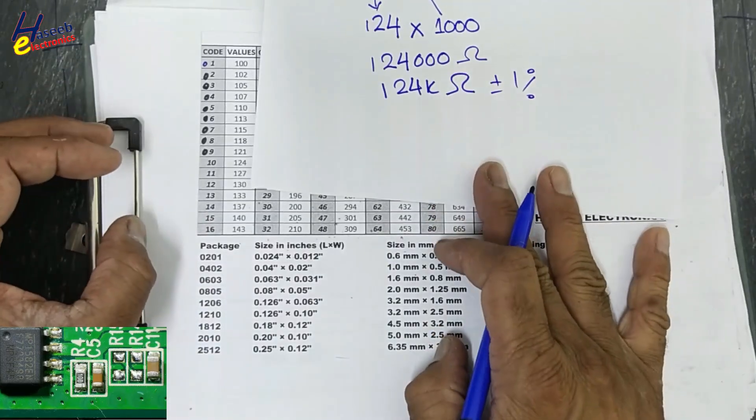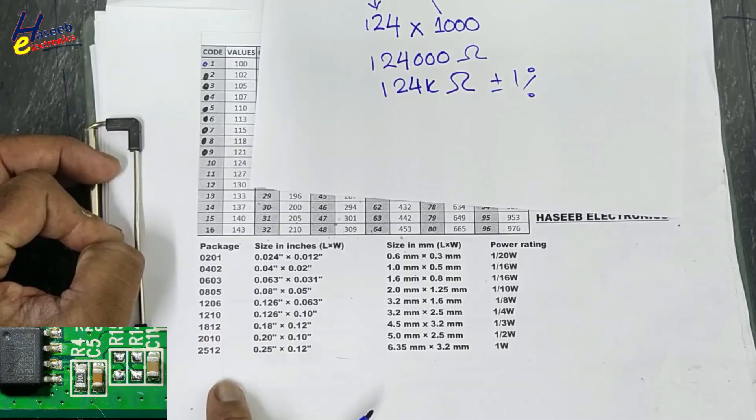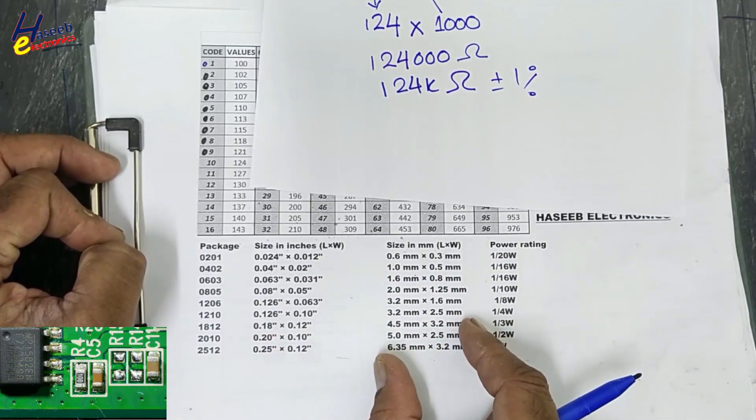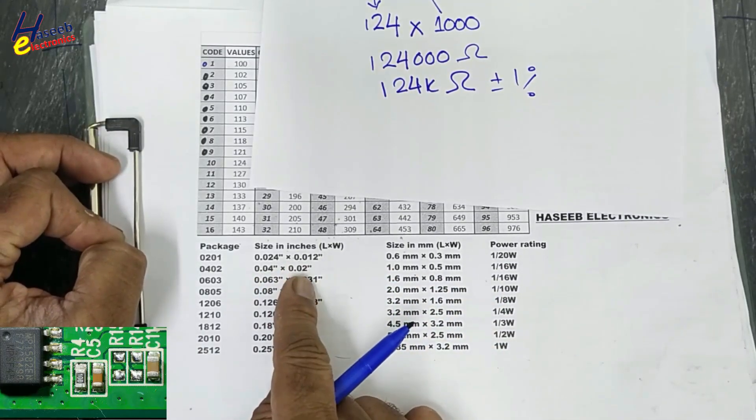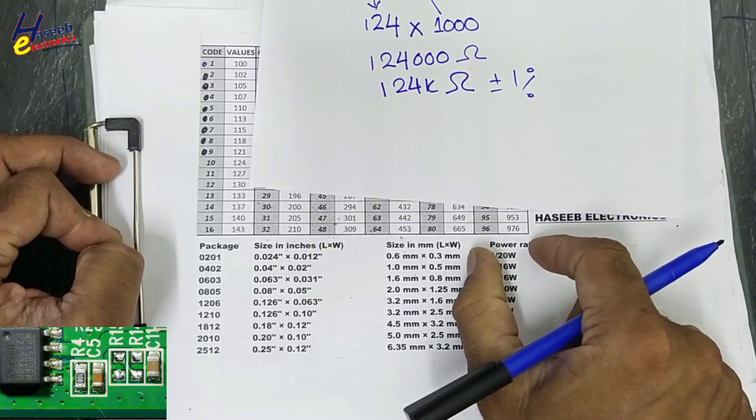If you want to know the power rating, check its size code in inches or millimeters, length and width. Then you will find the power rating.